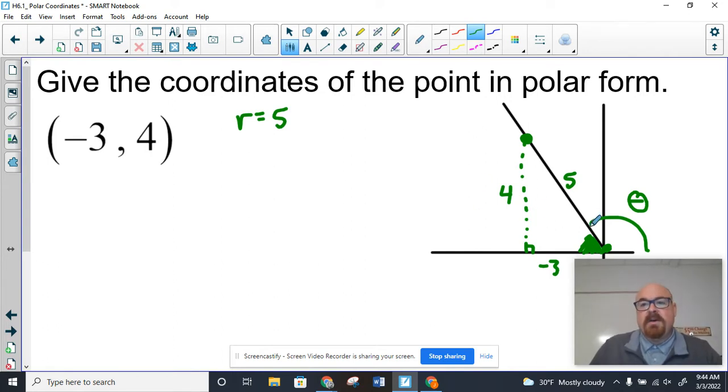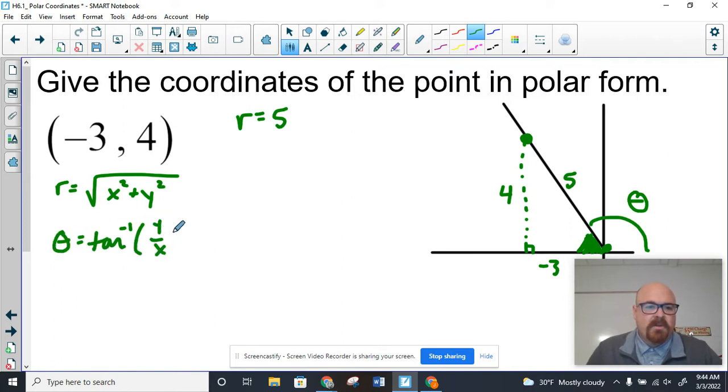So now, in terms of finding theta, there's a formula. We have two formulas. The formulas are fine if you want to use the formulas. Here's how we can find r, and here's how we can find theta. But I've been warning you about theta, and it's for reasons like this. So if you want to just plug in the inverse tangent of 4 over negative 3... Watch this.